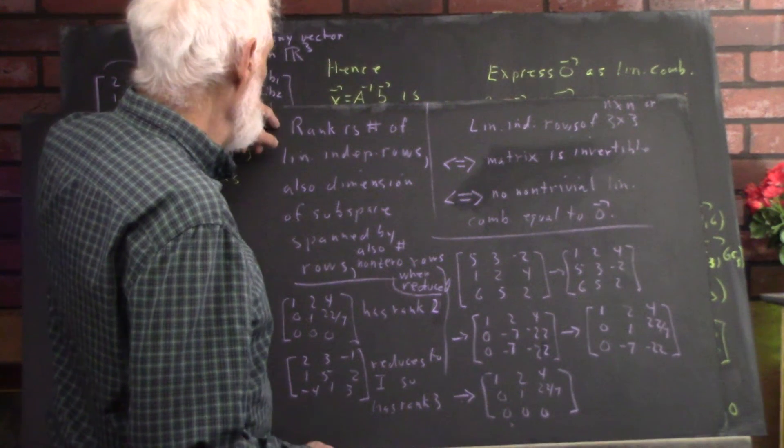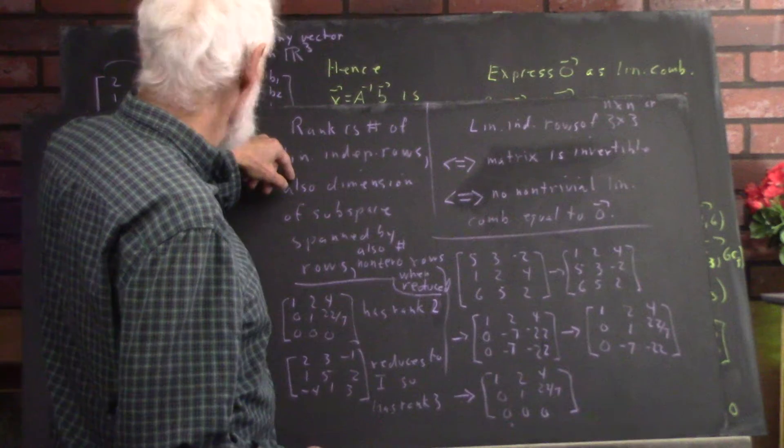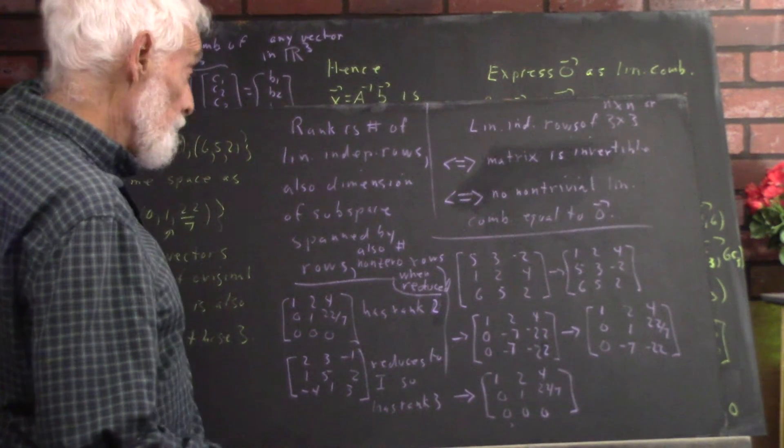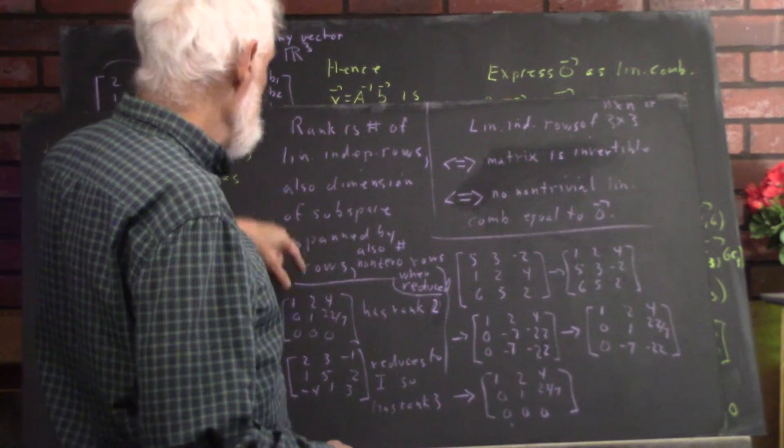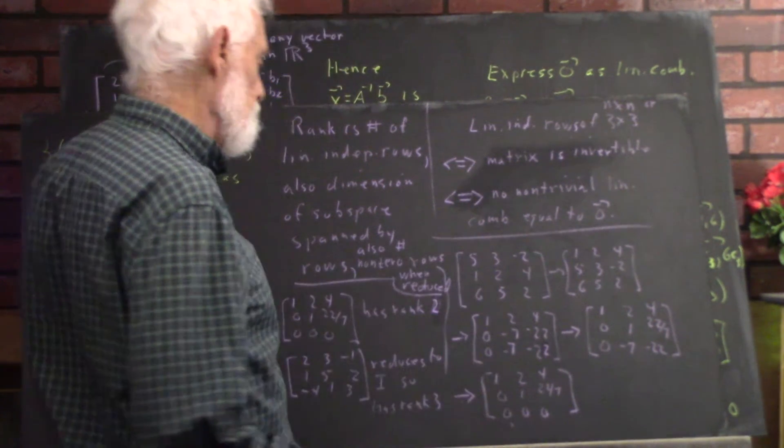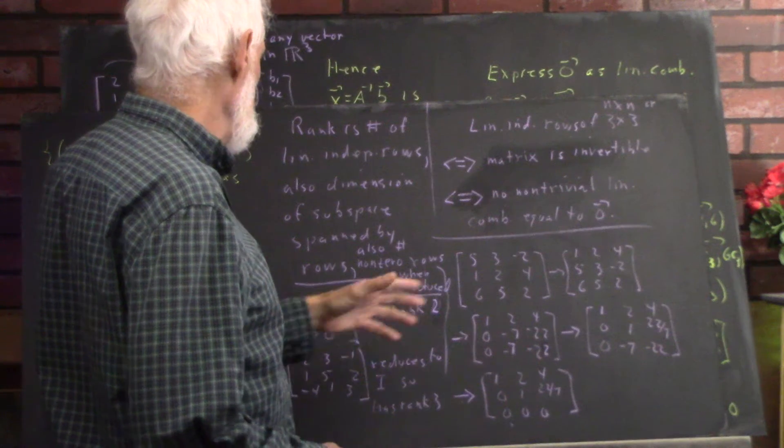The rank of a matrix is the number of independent rows. So, the matrix we have over here has rank 3. It has three independent rows. This matrix has only two linearly independent rows. It has rank 2.